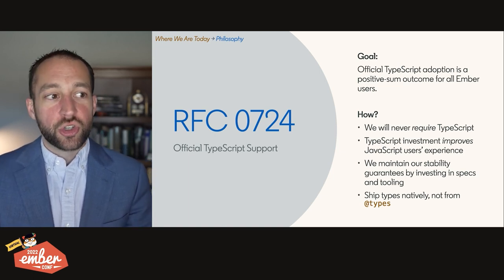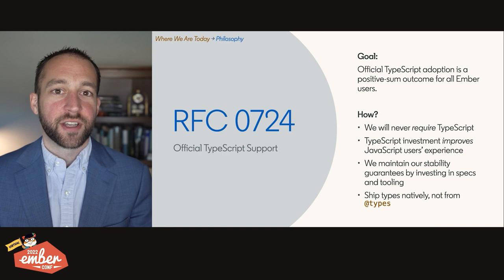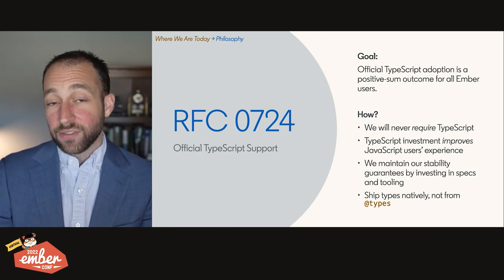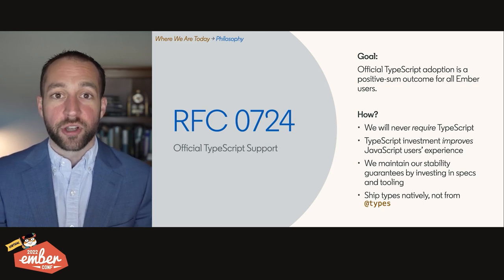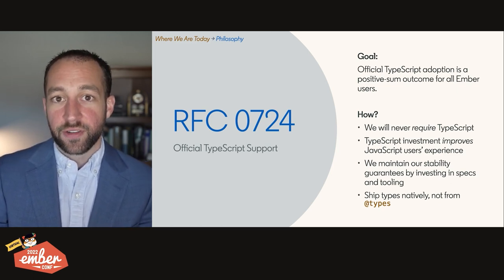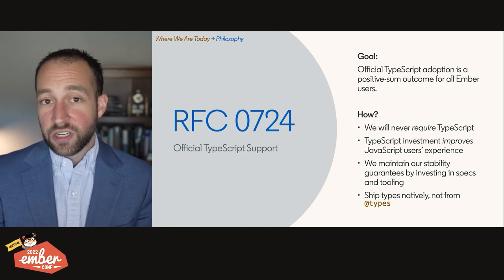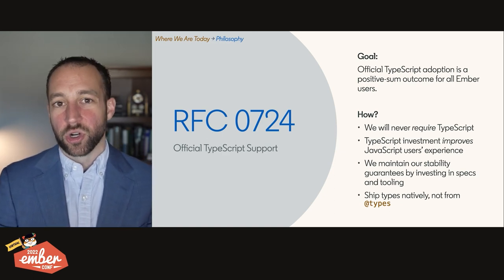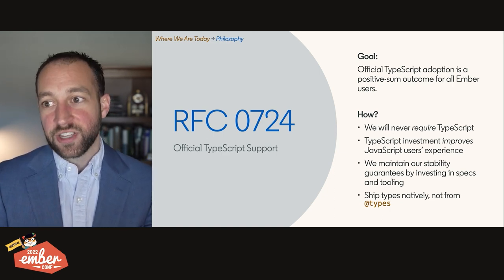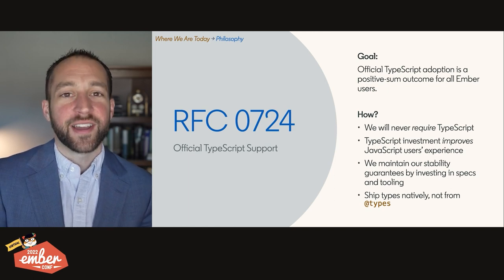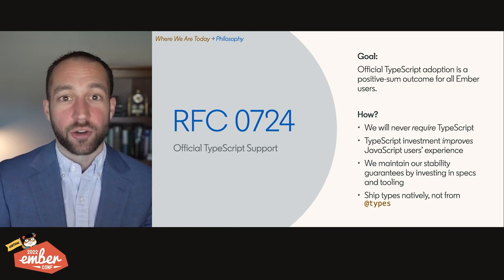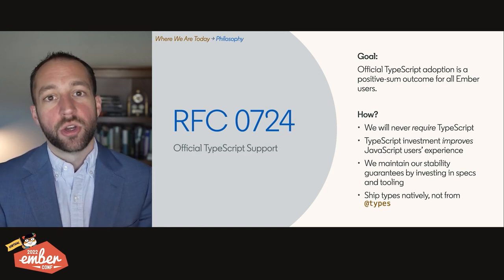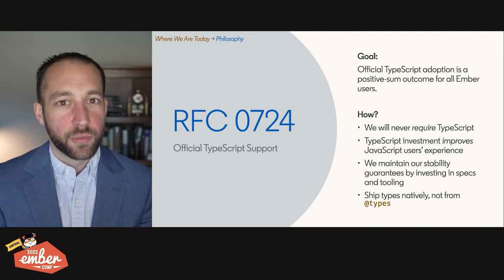As part of that, we commit to doing the work during our design processes to make sure that all our investments in TypeScript actually actively improve the experience for JavaScript users in the Ember ecosystem — and we'll see a number of concrete examples of this later. We need to make sure we keep our stability guarantees, which means we need to figure out how semantic versioning works when dealing with TypeScript. We'll invest in specs like a SemVer spec and tools, integration in CI, early warning about breaking changes, to make this possible. And we'll ship types natively, not from Definitely Typed.